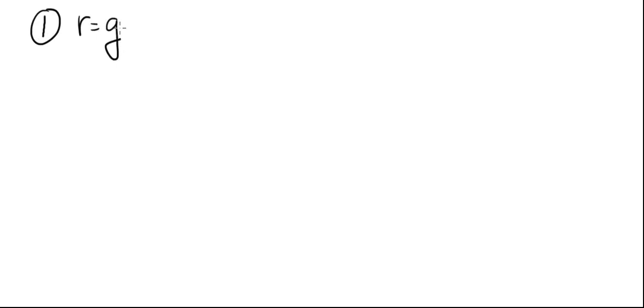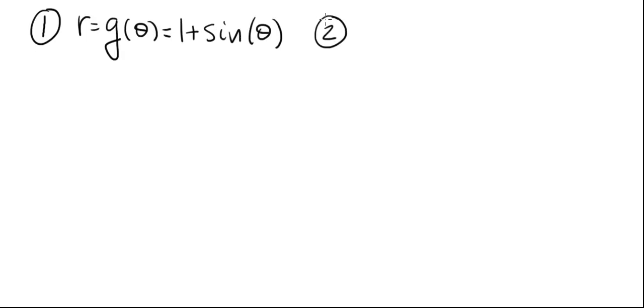We're going to sketch the graphs of two polar equations. The first one is r equals g of theta equals 1 plus sine of theta, and the second one is r equals h of theta equals 1 minus sine of theta.